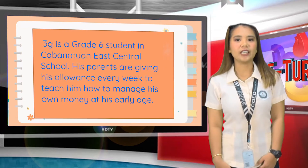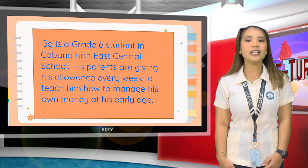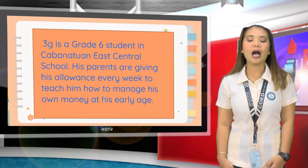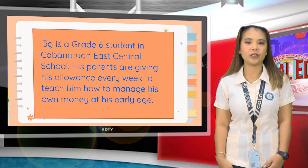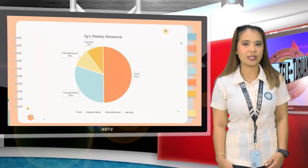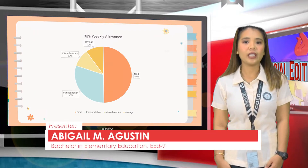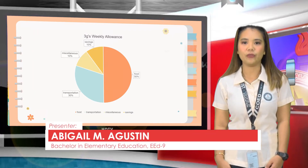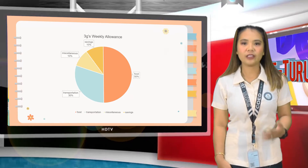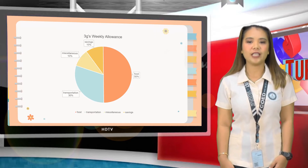3G is a Grade 6 student in Kabanatuan East Central School. His parents are giving him his allowance every week to teach him how to manage his own money at an early age. Here is how 3G spends his allowance: 50% in food, 30% for transportation, 10% for other expenses, and 10% for his savings.